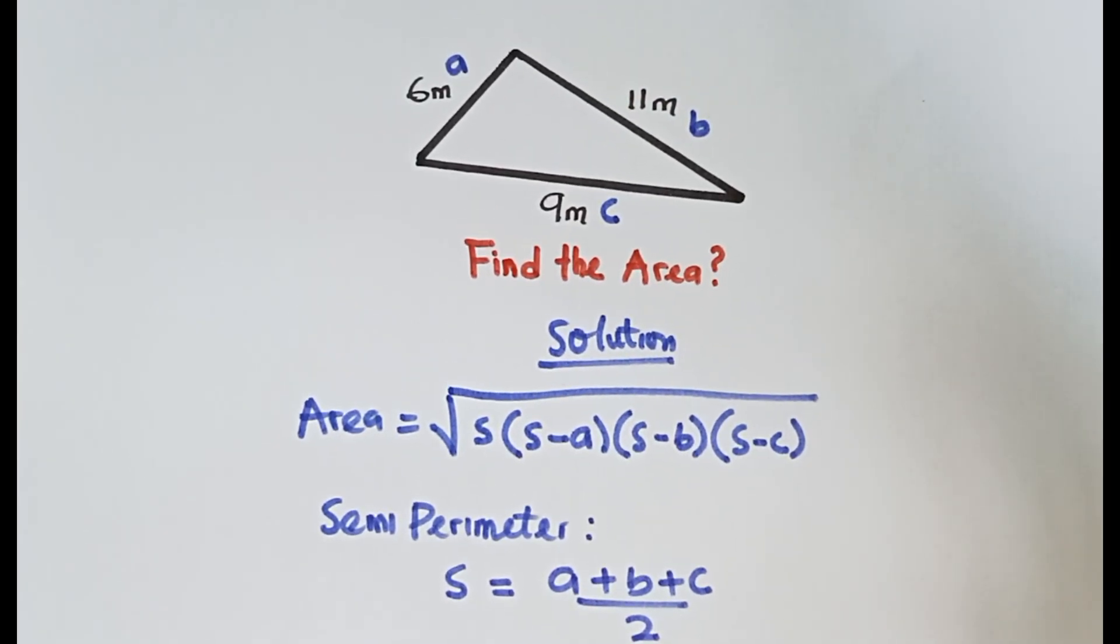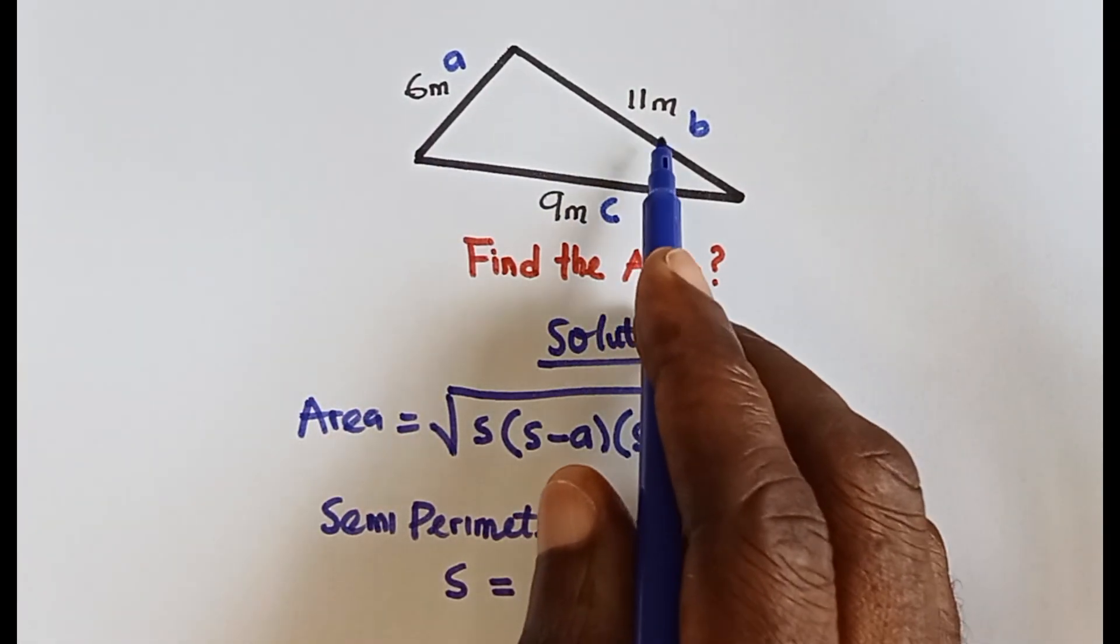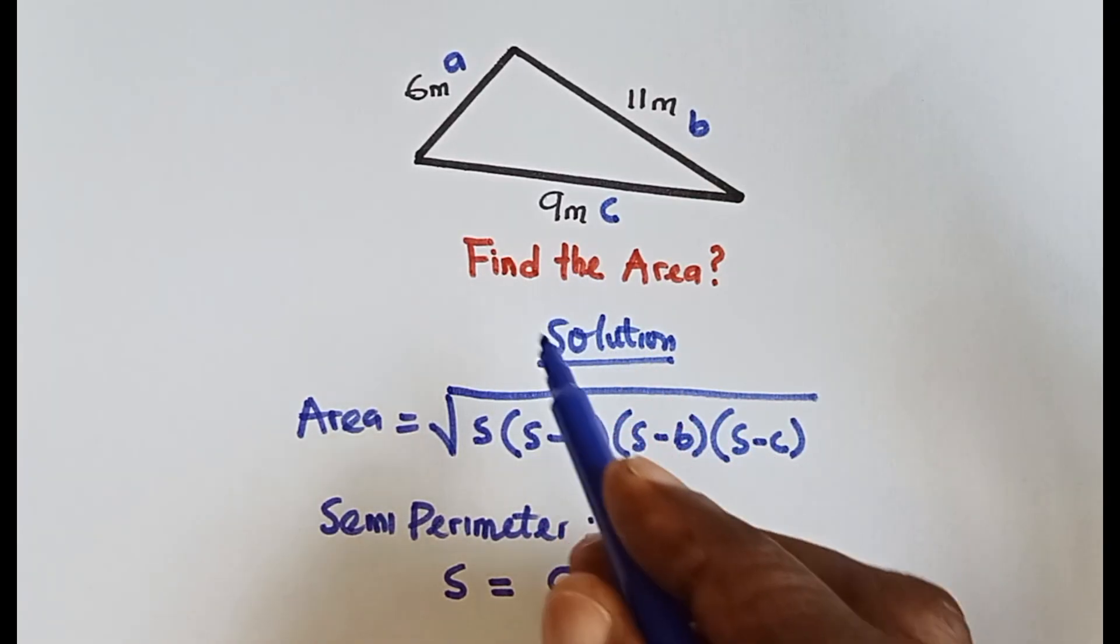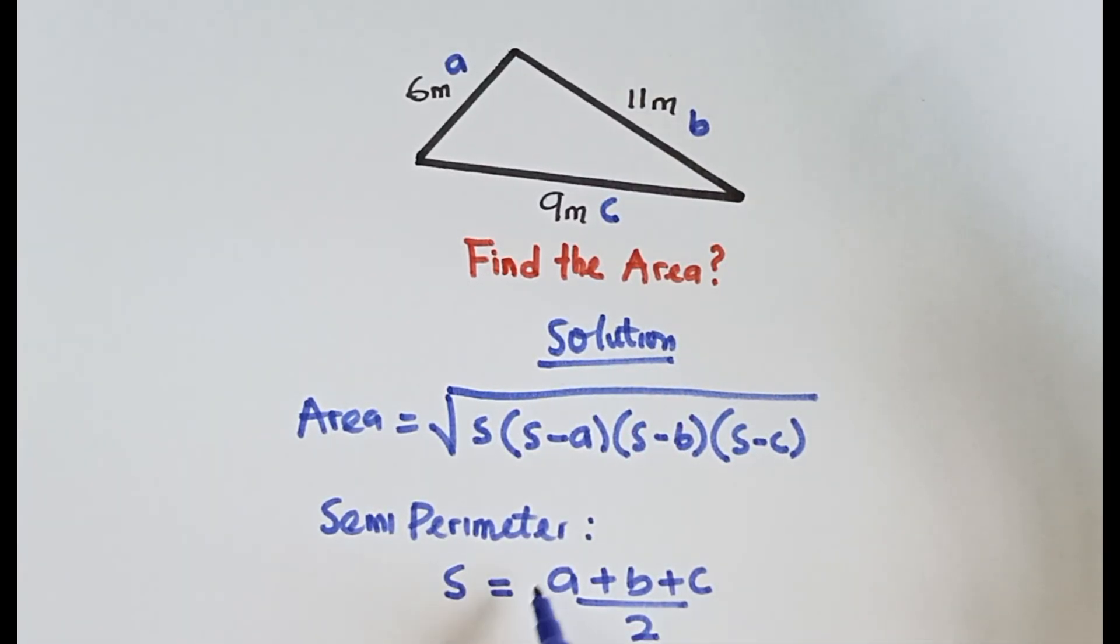We know what our a is - our a is 6, our b is 11, and our c is 9. We need to find our semi-perimeter first before we can find the area of this triangle.